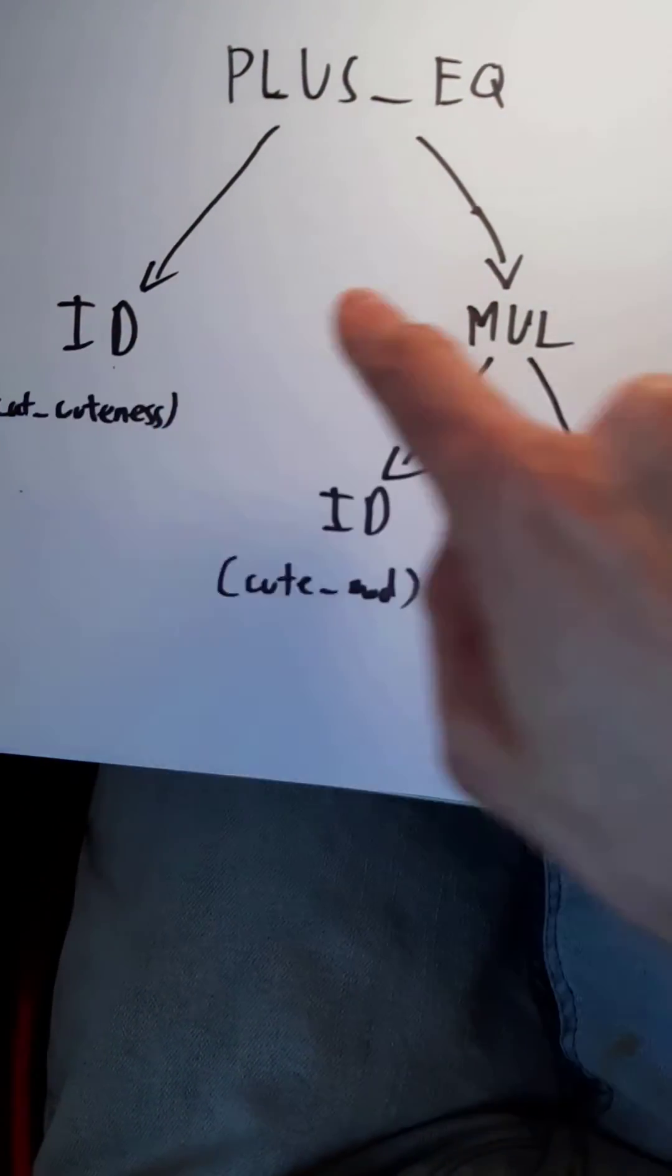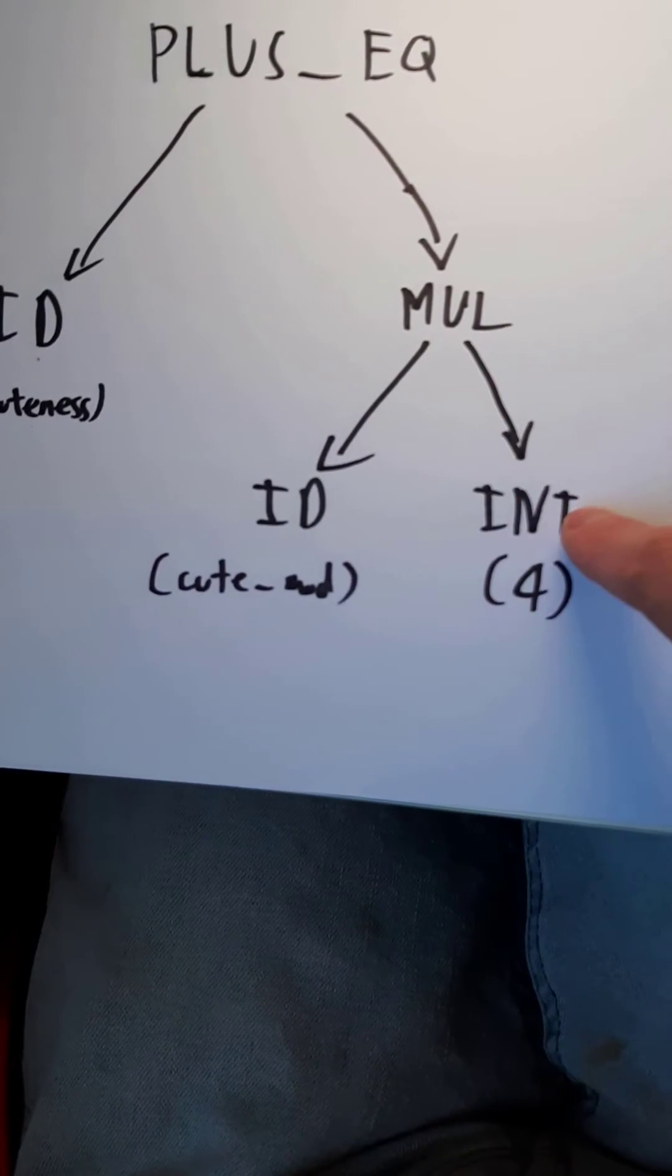We have plus equals, operands being an identifier, the result of a multiplication which takes an identifier and an int.